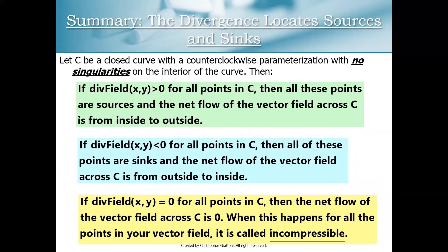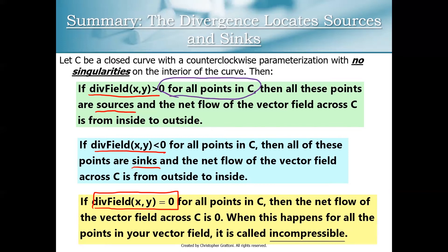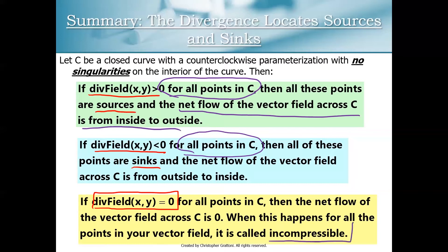Keep in mind that we can define sources as places where the divergence is positive, sinks as places where the divergence is negative, and of course there are points where the divergence equals zero — neither sinks nor sources. When the divergence is positive for all points inside a closed curve, the net flow is from inside to outside. If all points are sinks, it's outside to inside. When every single point in the vector field has a divergence equal to zero, that vector field is called incompressible.